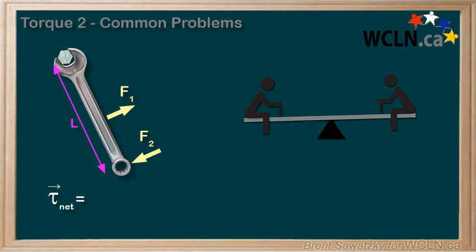So our net torque on this bolt as a result of the forces on the wrench would be the torque caused by F1, and that's applied at L over 2 from the pivot point. So the resulting torque is L over 2 times F1.